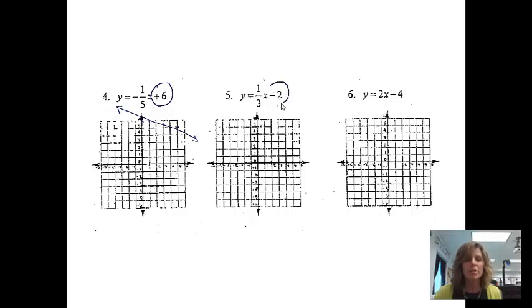Number 5, I'm going to circle the number without the x, which is negative 2. So I'm going to start down at negative 2. This was my y-axis. And then from here, I'm going to rise 1 and run 3. And then we can go ahead and connect them. And again, those arrows are very important.